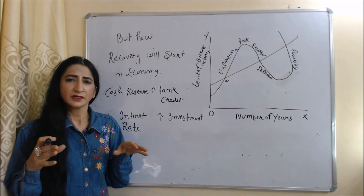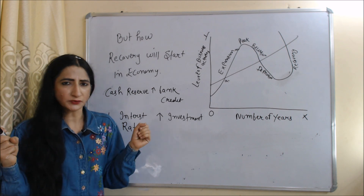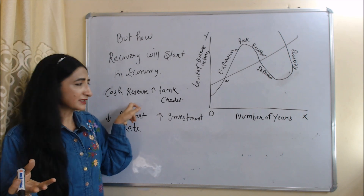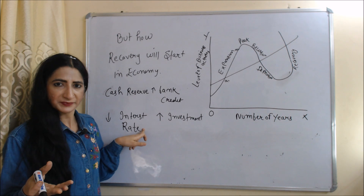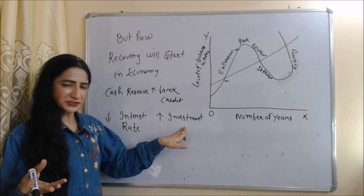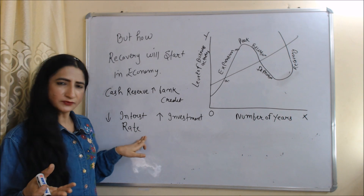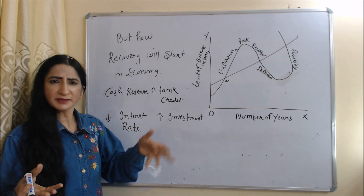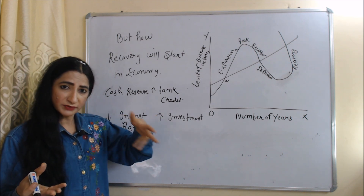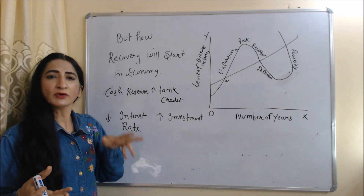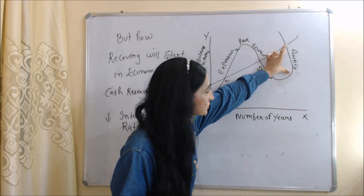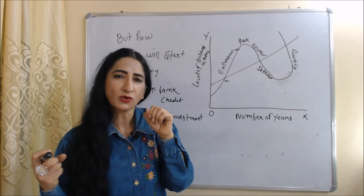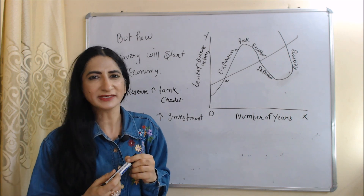Now, how does recovery start? During depression, investors were not taking loans from banks, so banks' cash reserves increase. As cash reserves increase, banks increase bank credit and reduce interest rates. As interest rates reduce, investment increases because people start taking loans for investment purpose. As investment increases, output, employment, income, demand, and profit all start increasing. This is called the recovery phase of the business cycle. So in Hawtrey's theory, the main cause of fluctuation in economic activity is change in money supply.